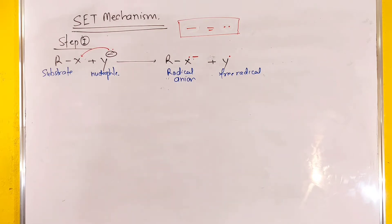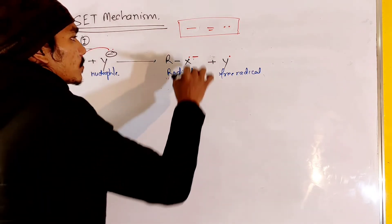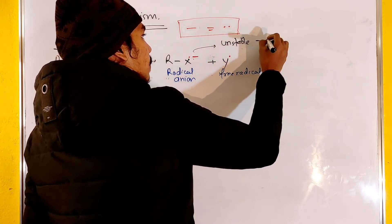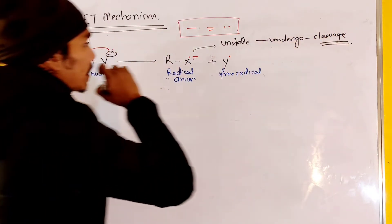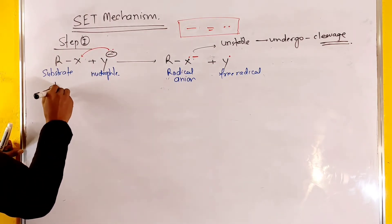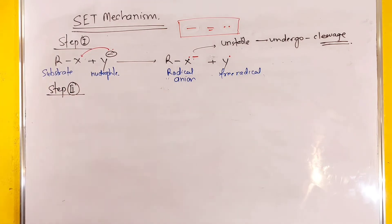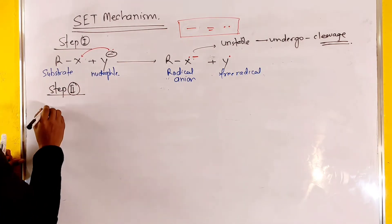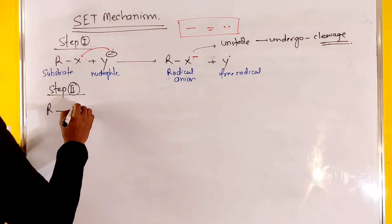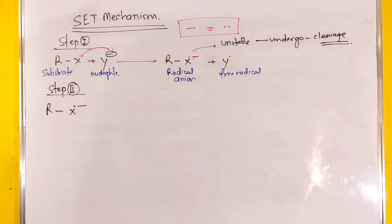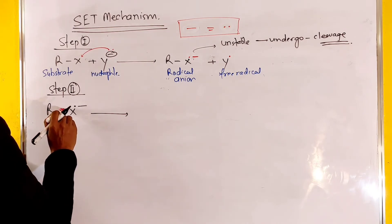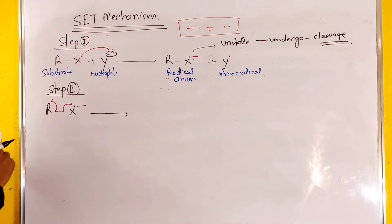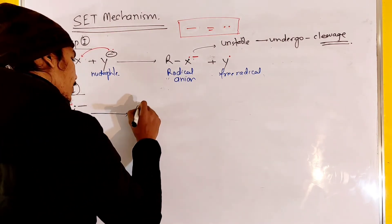This is a free radical, and this is a radical anion. Radical anion is unstable, which undergoes cleavage. Radical anion is unstable — it undergoes cleavage. This is a free radical anion which undergoes cleavage. R, X — radical anion is unstable and undergoes cleavage.